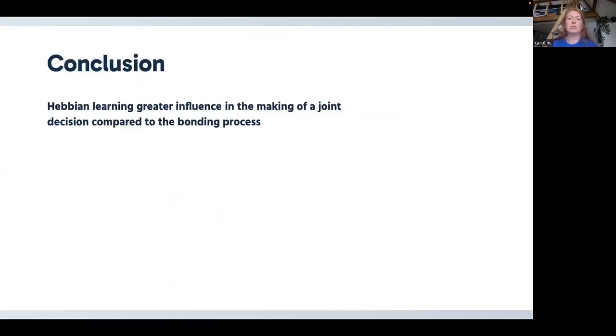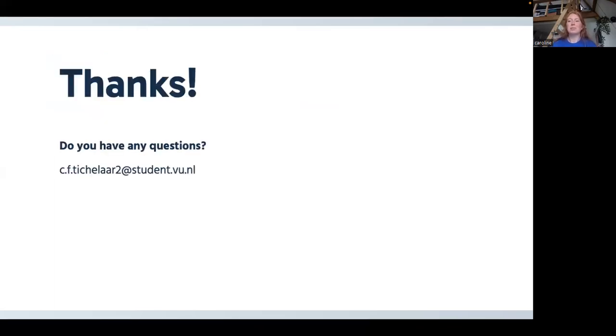We can conclude from these results that Hebbian learning has a greater influence in the making of a joint decision compared to the bonding process, as we could see that in scenario three, the results are almost similar to our baseline. And we can see that in the combined scenario, there is almost no difference to our scenario two, which had the lower learning. So that was the presentation about the second order adaptive model.